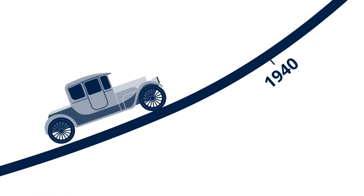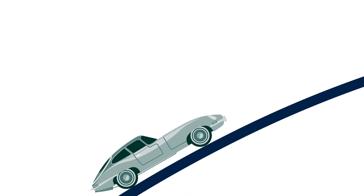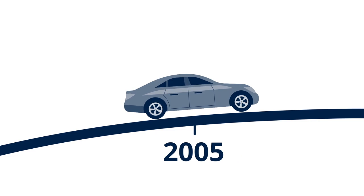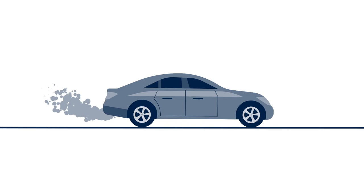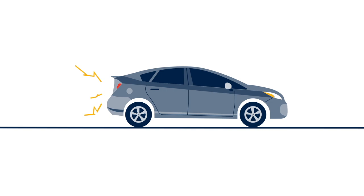We can think about this in the example of the auto industry. In the early days, there was a lot of ferment about what a car looked like, then the dominant design around a petrol engine car emerged. There were a lot of improvements over time, and then eventually a tailing off. So petrol or gas engines have been the dominant design, and now we can think about the introduction of a discontinuity — a whole new architecture in terms of electric vehicle platforms — defining a new S-curve.